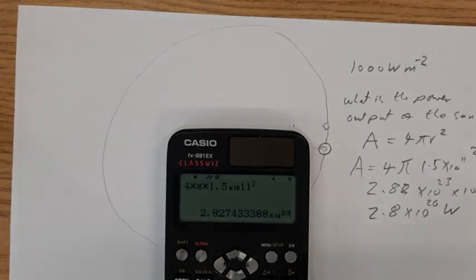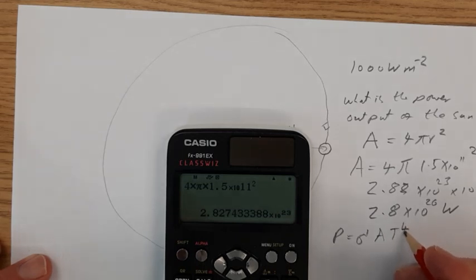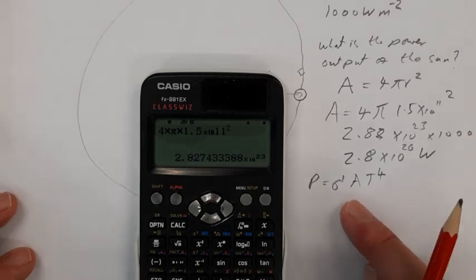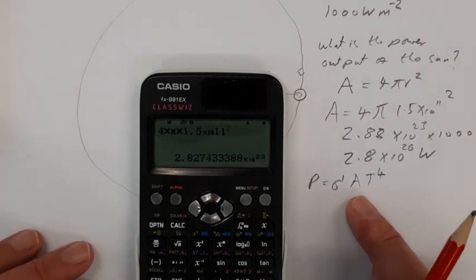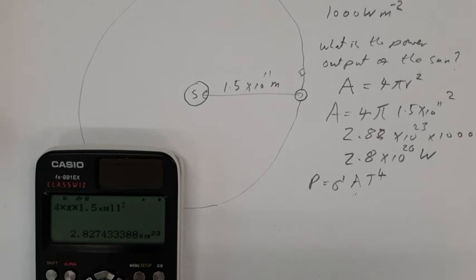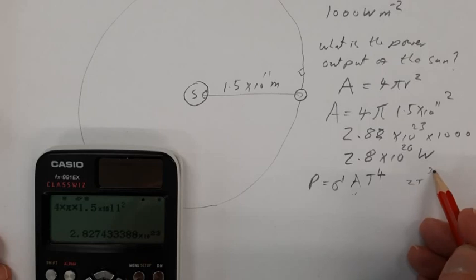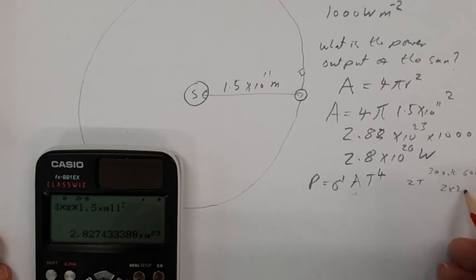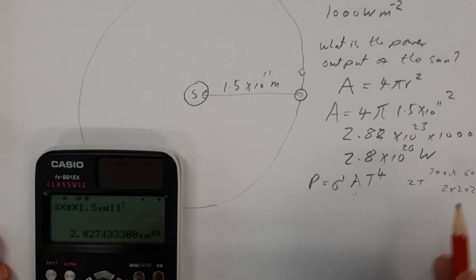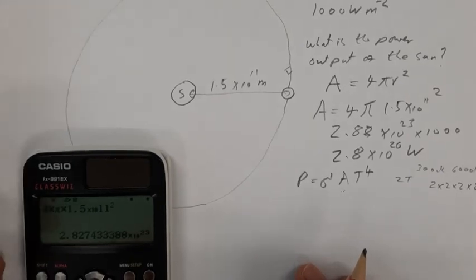The next thing we can do, if we remember Stefan's law, P equals sigma A T to the 4. We're just going to pause and have a couple of things in Stefan's law. One thing is that this area is now the thing, area, not of that entire sphere, but the surface area of the sun, the actual part of the sun that's giving out radiation. And look at this T to the 4 term. So if you can imagine, if we double the temperature of an object, so if we compared a star at 3,000 kelvins and 6,000 kelvins, that's 2 times 2 times 2 times 2, 2 to the 4 times brighter. 16 times brighter if you double the temperature.